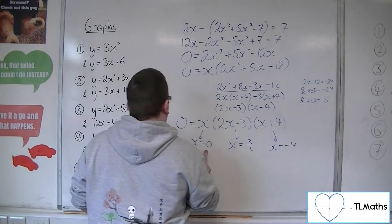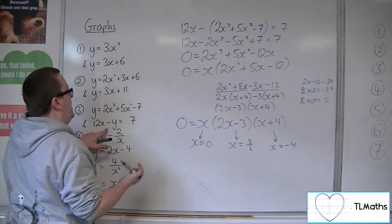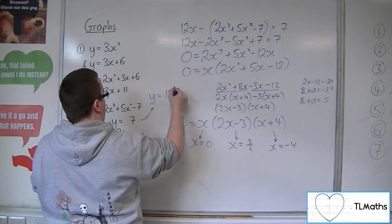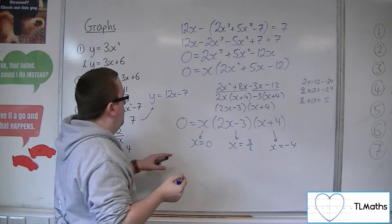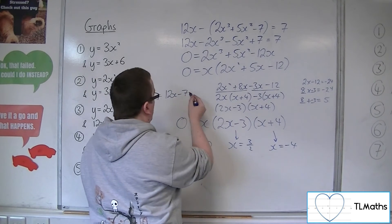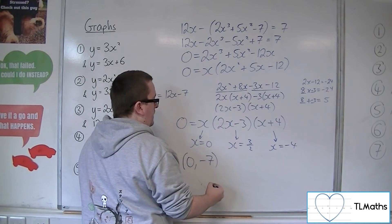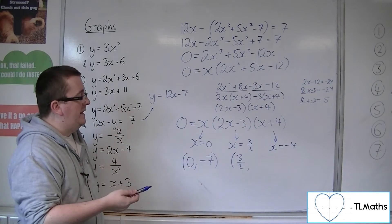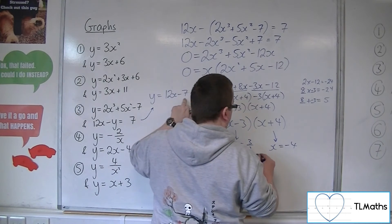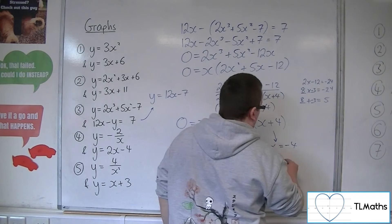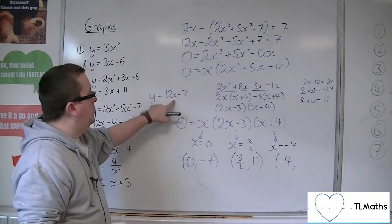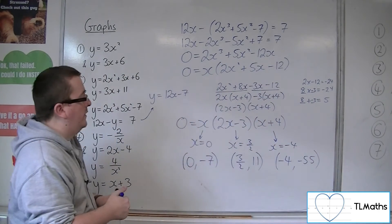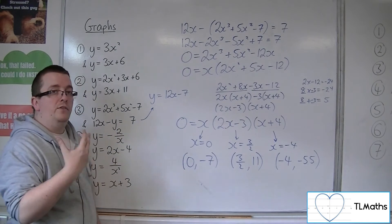To find the y-coordinates, I'll rearrange 12x minus y equals 7 to get y equals 12x minus 7. When x is 0, y is 12 times 0 minus 7, so minus 7. When x is 3 halves, 3 halves times 12 is 18, take away 7 is 11. When x is minus 4, minus 4 times 12 is minus 48, take away 7 is minus 55. So the three coordinates of intersection are (0, minus 7), (3/2, 11), and (minus 4, minus 55).